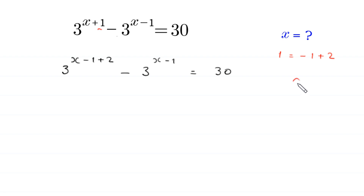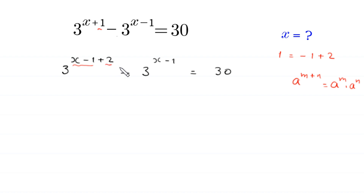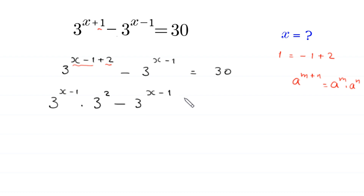Now, by using the power rule — a to the power m plus n is equal to a to the power m times a to the power n — we can write this expression as 3 to the power x minus 1 times 3 squared, minus 3 to the power x minus 1, equal to 30.